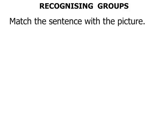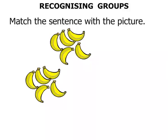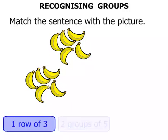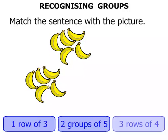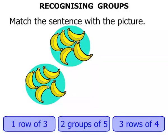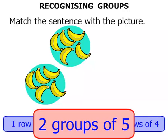Now in this one we need to match the sentence with the picture. We've got a picture of bananas. The options are: one row of three, two groups of five, or three rows of four. I wonder which is the right sentence. Well, we've got one, two — two groups. How many in each group? One, two, three, four, five. We've got two groups of five.